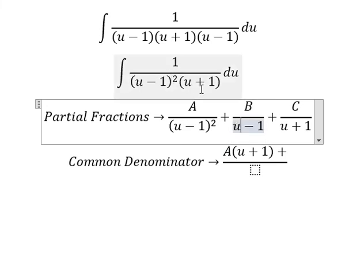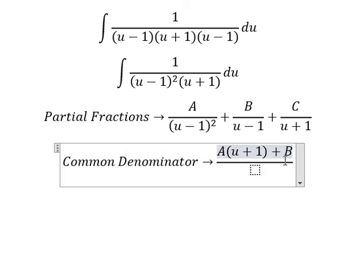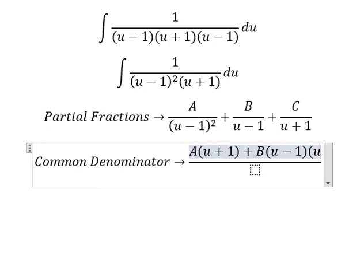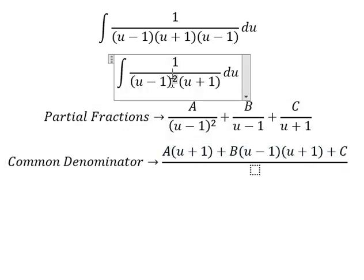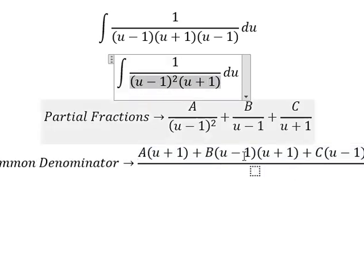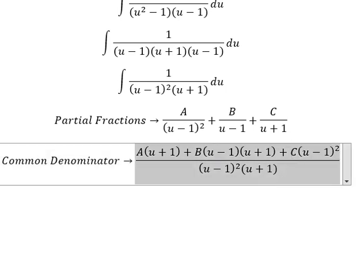We multiply capital A by the denominator, capital B by u minus 1 and u plus 1, and the last term involves u minus 1 squared. Next, we need to expand all the terms.